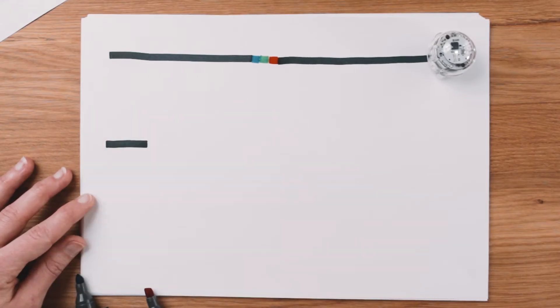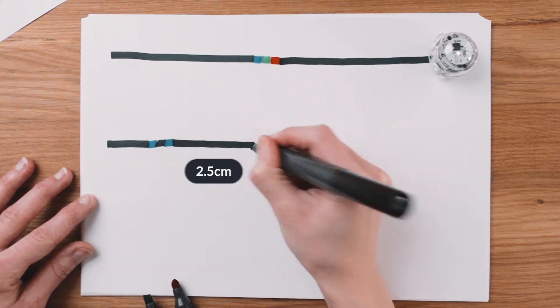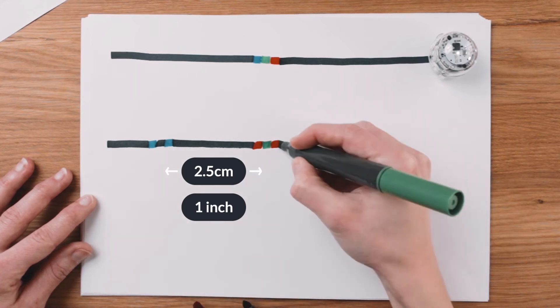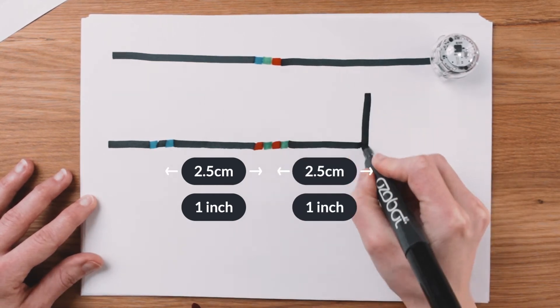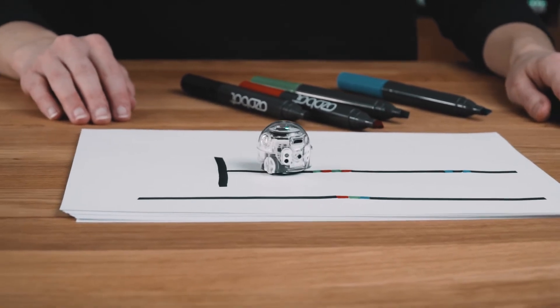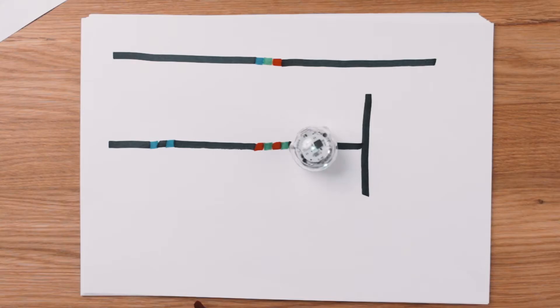Color code placement is also important. They should be at least two and a half centimeters or one inch from any other color codes and any intersections. Evo can only read one color code at a time and needs enough room to execute your command before reading another code.